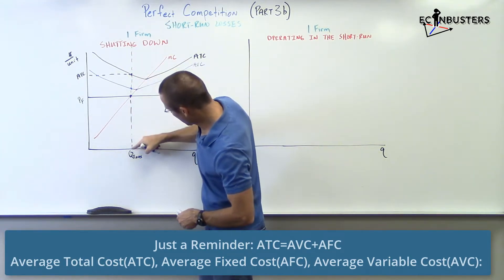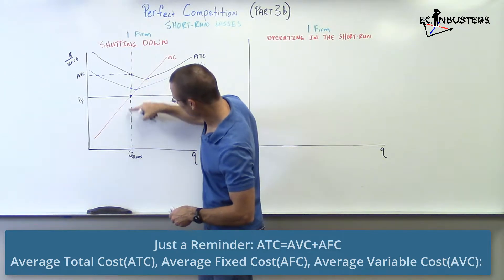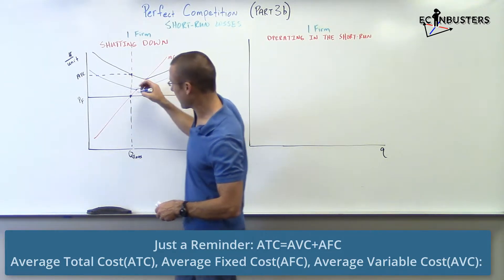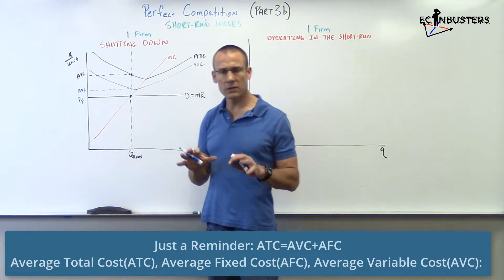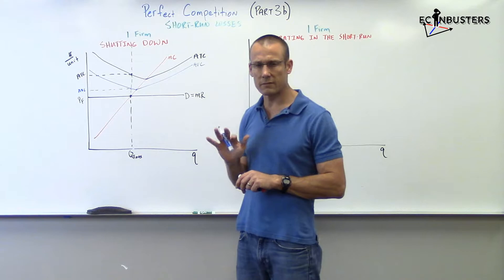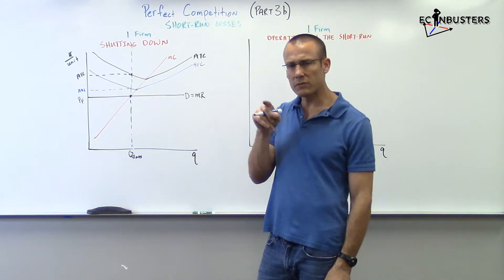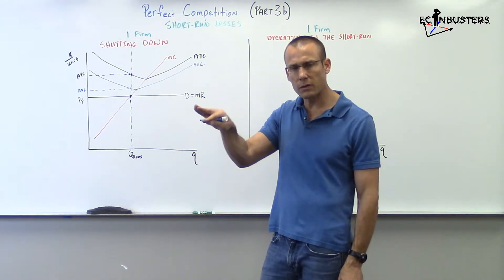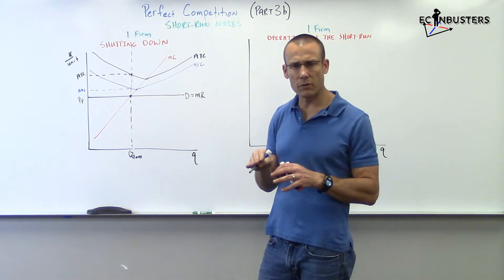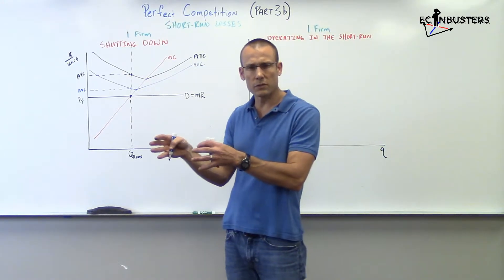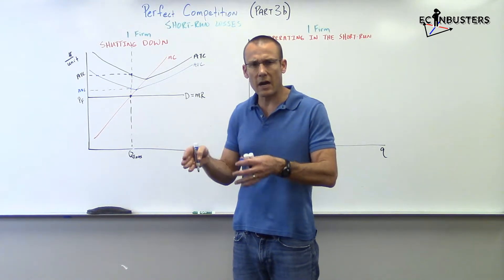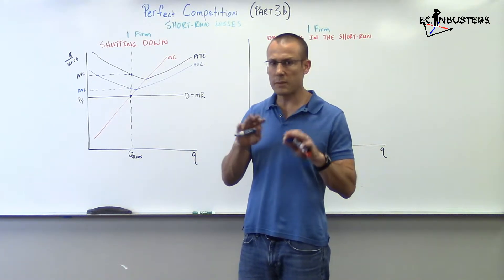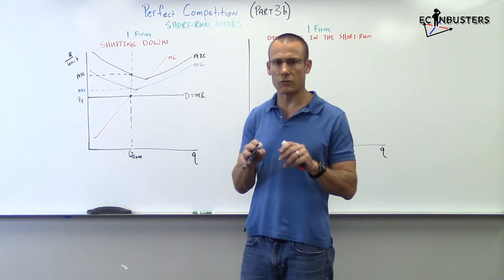So, what's going on here? We've got AVC. AVC at our level of output is above price. Now, for some of us, that's good enough. We can already kind of see, oh, wait, okay. If the average variable cost, the cost from production, is above the per unit revenue, that means every time I'm producing a good, on average, I'm losing money. Every time I produce a good, I should shut down. So, for some of us, maybe that's all you need. Maybe you just got it. Great. For me, it took a little bit more work, so I'm going to explain this a little bit deeper to make sure that we've got this.